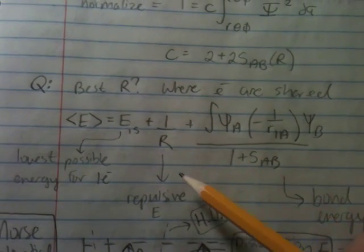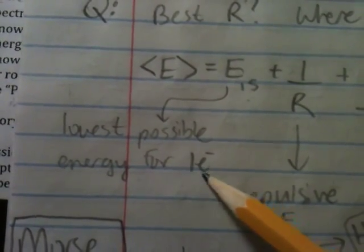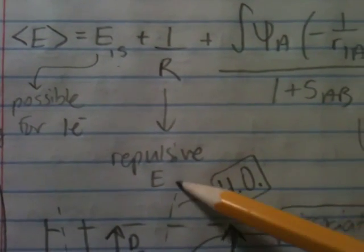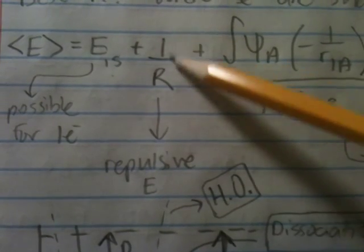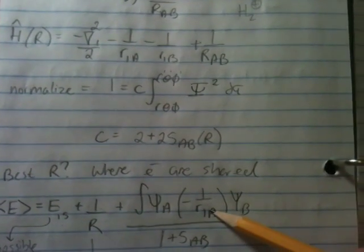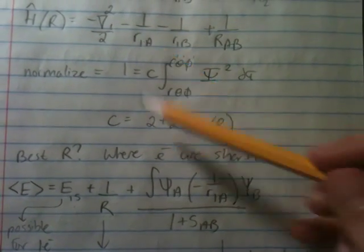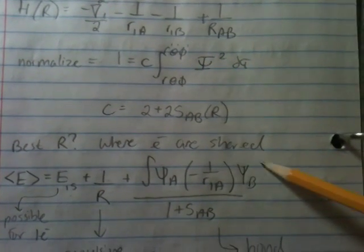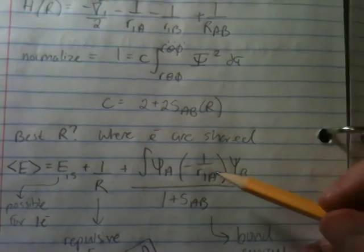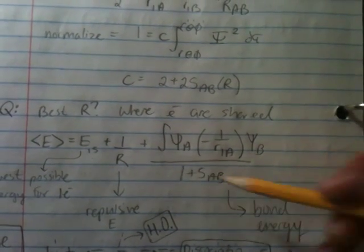So, what goes in here? A couple, a few terms. The first term is the lowest possible energy for one electron in the 1s state. The second term is your repulsive energy. So, this is a plus 1 over R, your repulsive energy. And then you have this fun integral. It basically uses the Hamiltonian term operator. Negative 1 over R1a. This is where this comes from. Acting on your psi of B.